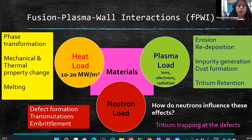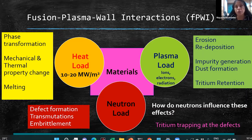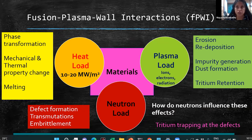Plasma load — ions, electrons, radiation, and neutrons — has several effects on materials. High heat can cause melting, or at moderate levels cause phase transformations such as body-centered cubic to face-centered cubic. Melting is a first-order phase transition, and second-order phase transitions can also change mechanical and thermal properties. For example, a material with very high thermal conductivity could undergo a phase transformation to a low thermally-conducting state, which is not good for your design.